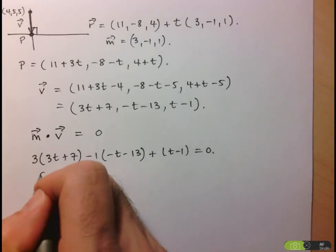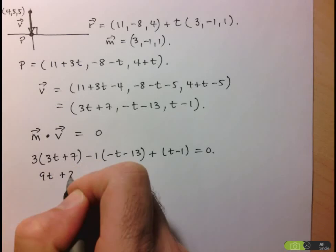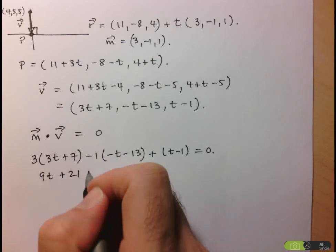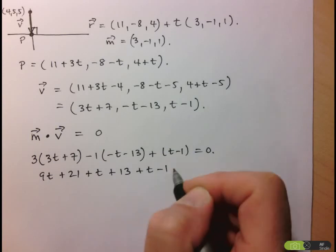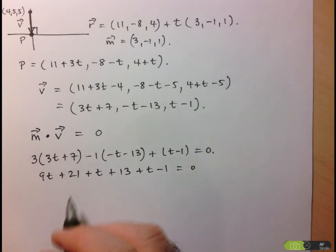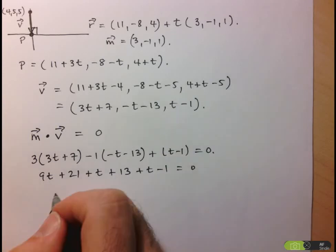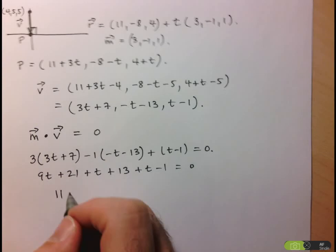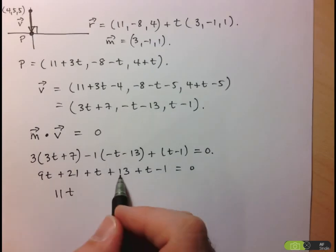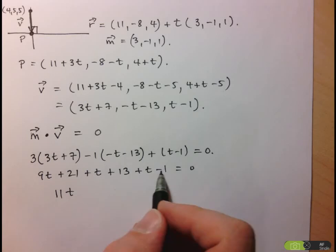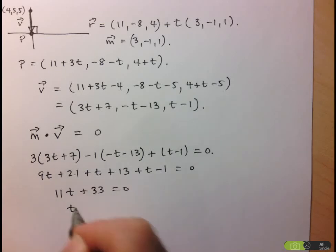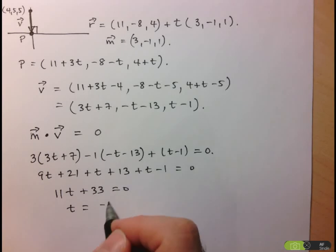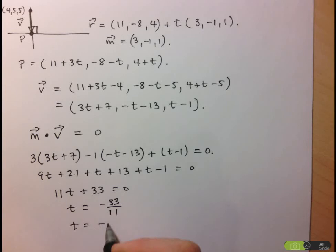Expanding: 9t + 21, then + t + 13, then + t - 1 = 0. That gives 11t + 33 = 0, so t = -33/11, or t = -3.